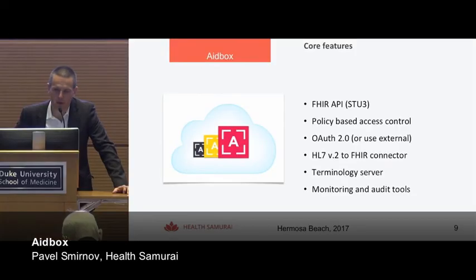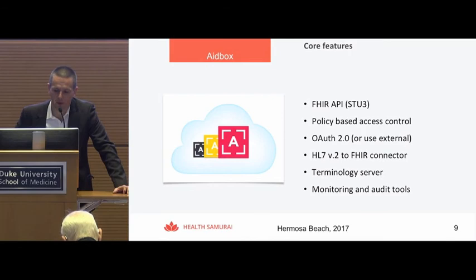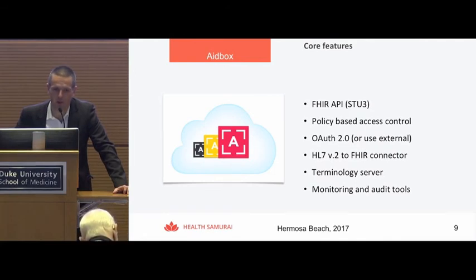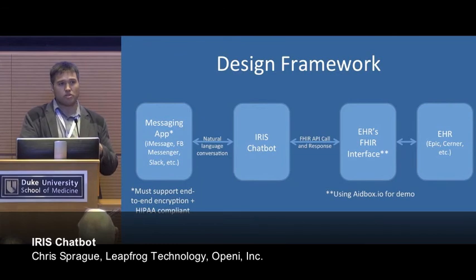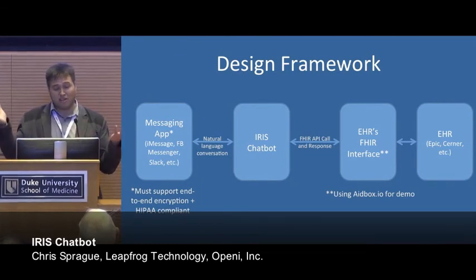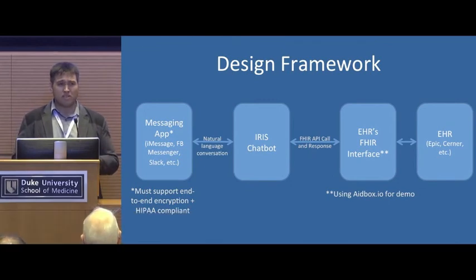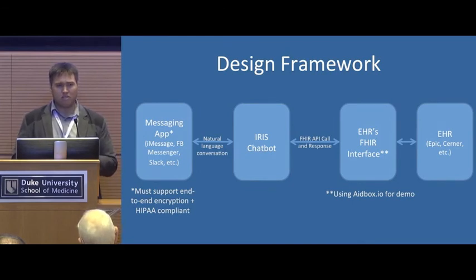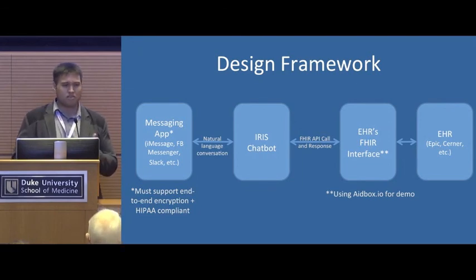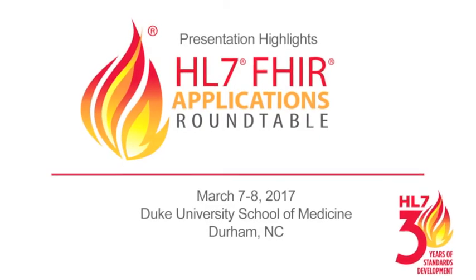8box has an OAuth 2.0 authentication provider, but you can also use an external authentication provider. We have an HL7 Version 2 to FHIR connector, so you can send HL7v2 data into 8box and we translate it into FHIR and store it in the FHIR server. The real engine is natural language conversion — an extensible rule set based on terminology, which is now standards-based, along with keywords and the way people generally speak and chat. IRO's chatbot translates that dialogue into commands that are then converted into FHIR API calls and responses to give the dialogue back to the user.